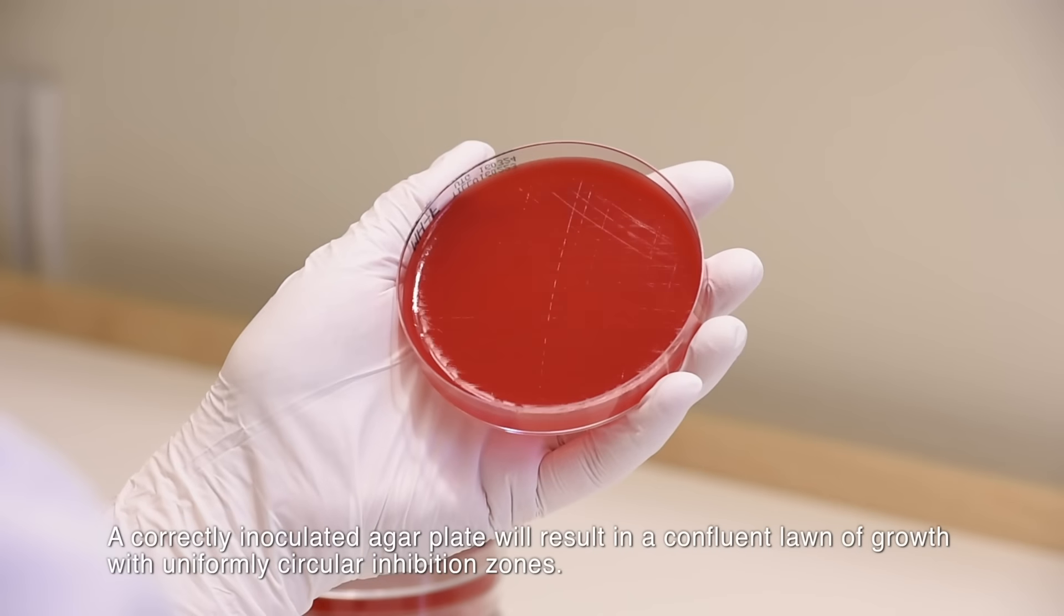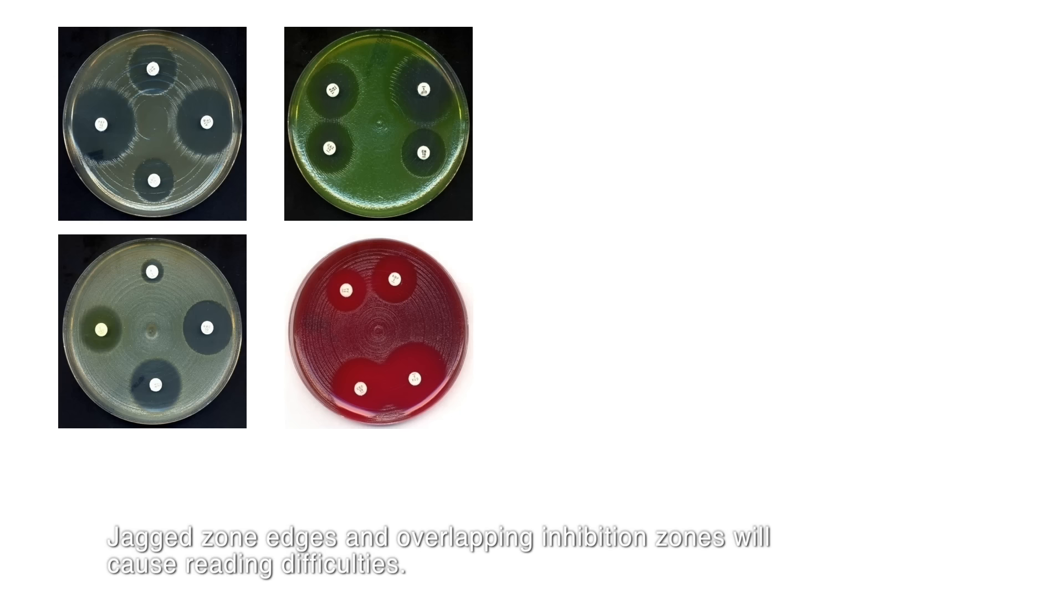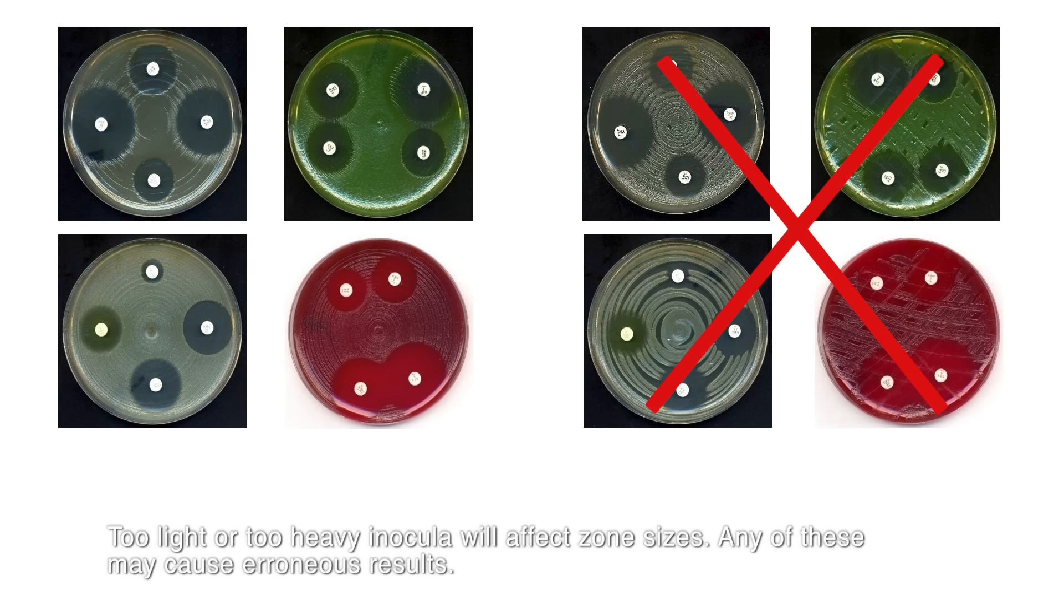A correctly inoculated agar plate will result in a confluent lawn of growth with uniformly circular inhibition zones. Jagged zone edges and overlapping inhibition zones will cause reading difficulties. Too light or too heavy inoculation will affect the surface. Any of these may cause erroneous results.